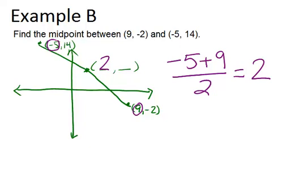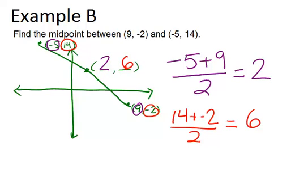And we do the same thing now for the Y-coordinates. Find the average of 14 and -2. So 14 plus -2, divided by 2. 14 plus -2 is 12, divided by 2 is 6. So that means our Y-coordinate is going to be 6, because 6 is the number exactly in the middle of 14 and -2.